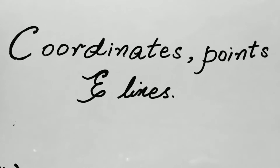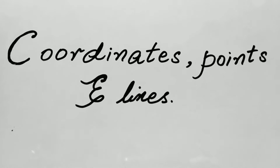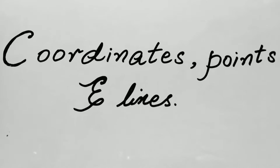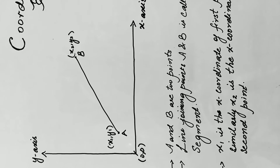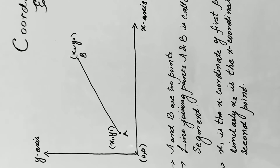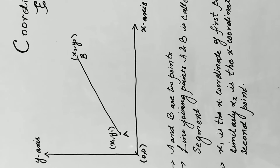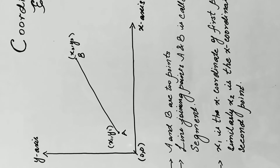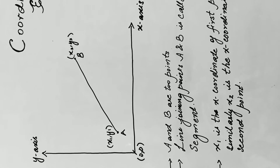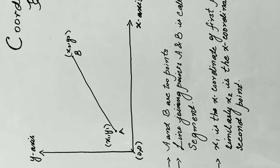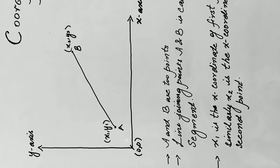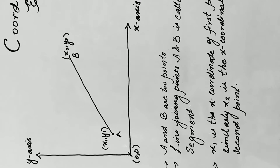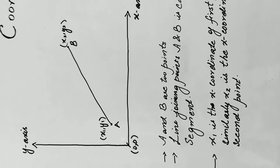Hello and welcome. In this video we are going to start covering the topic of coordinate points and lines. First of all, look at this diagram in which there is a line lying on the x-axis and y-axis. As we know, x-axis is the horizontal axis and y-axis is the vertical axis. There are two points A and B, and the line joining them is called a line segment.